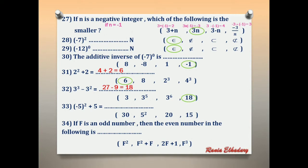Number 33: (negative 5) power 2 plus 5. (Negative 5) power 2 = 25. 25 plus 5 equals 30.